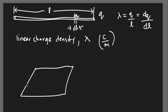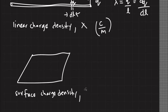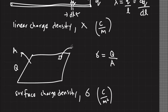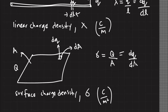For surface charges, we define surface charge density as charge per unit area, symbolized by small sigma, with SI units of coulombs per meter squared. If a total charge Q is distributed over a surface with area A, then surface charge density equals the total charge divided by the area. For an infinitesimal area dA with charge dQ, surface charge density is also equal to dQ over dA.